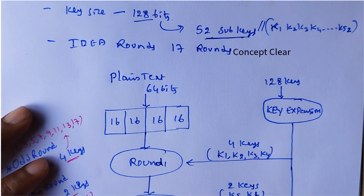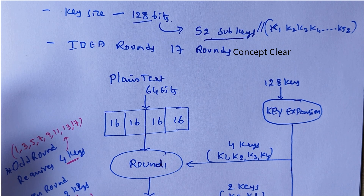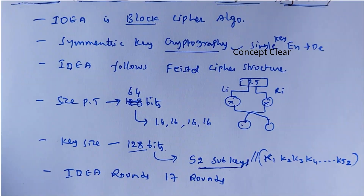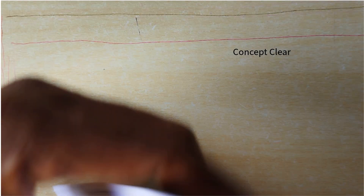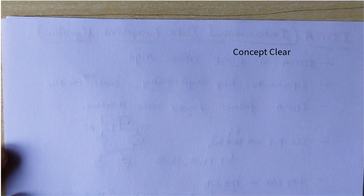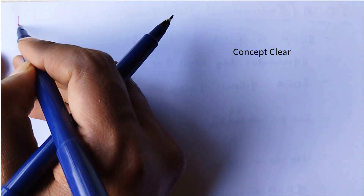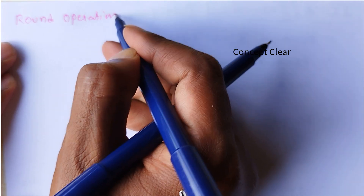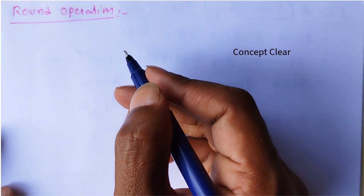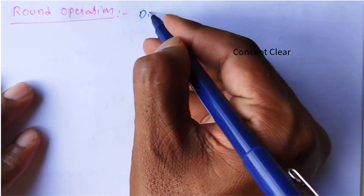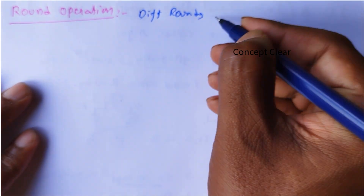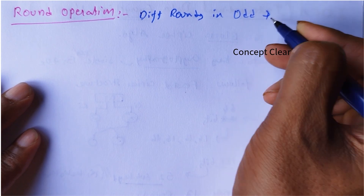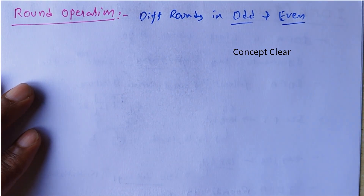We will now see what happens in round operations. In each round, operations differ between odd and even rounds — unlike previous algorithms like DES or AES where all round operations are the same. In IDEA, odd round operations are different and even round operations are different.